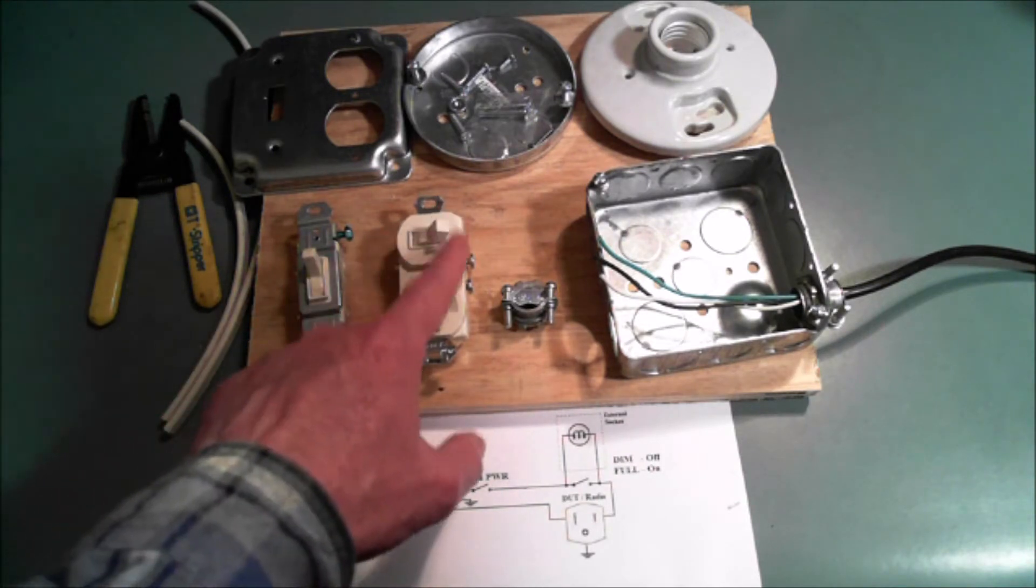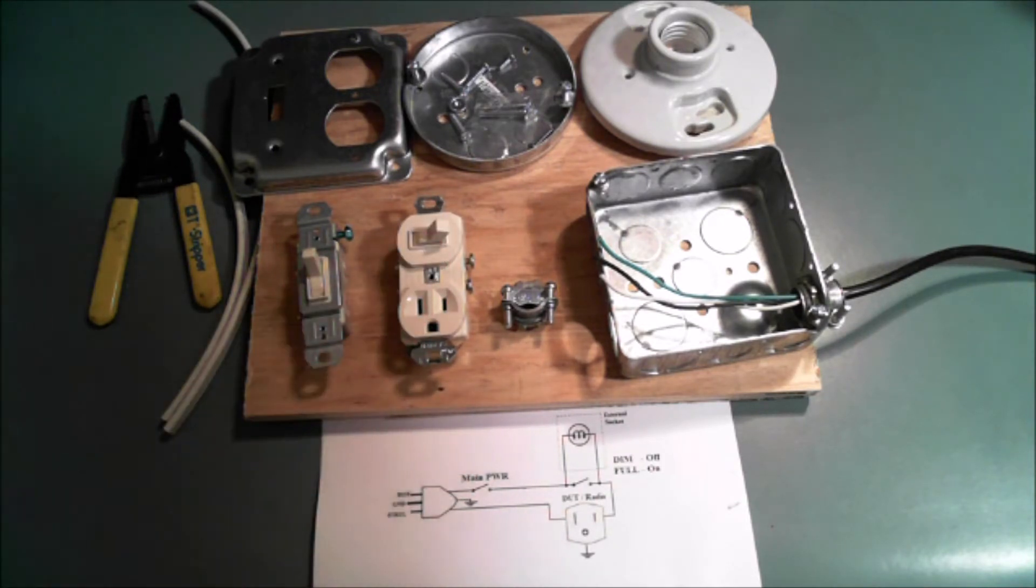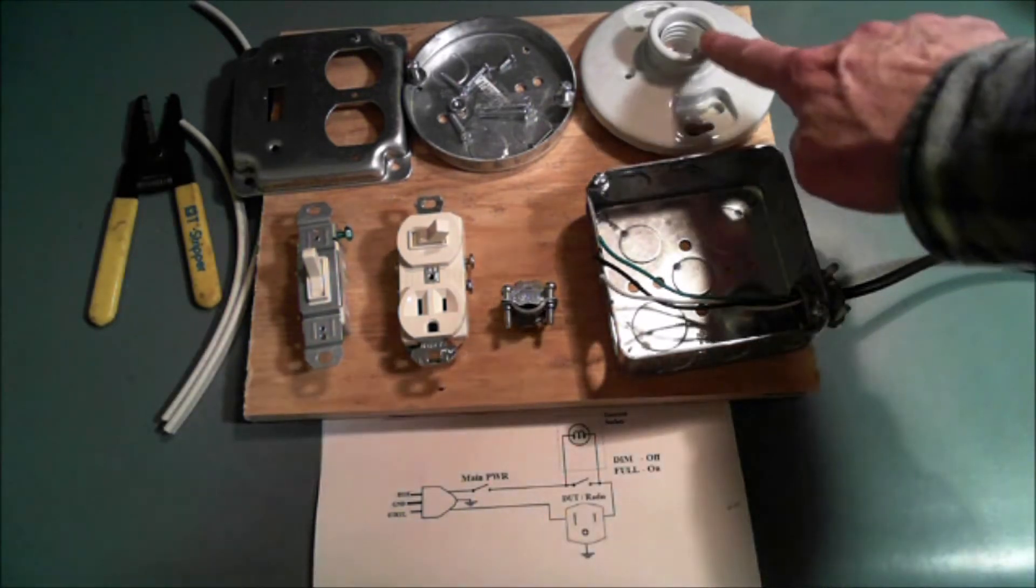This switch here will be used to bypass for full load or to inject the bulb in series with the line for current limiting. And this switch here will be the main power switch. And of course this is where the light bulb will go.